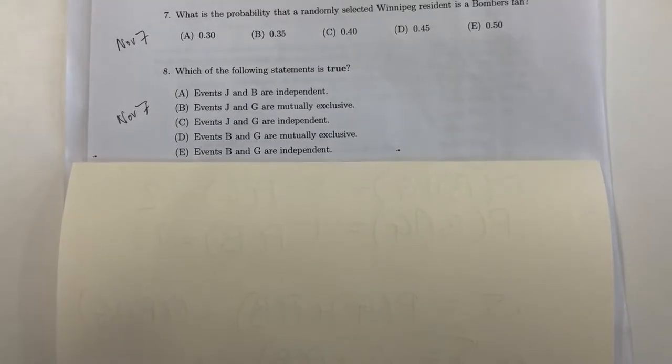I'll be going over question 8 from sample final number 4. From the previous question where we drew out the Venn diagrams for the events where someone's a Jets fan, a Gold Eye fan, or a Bomber fan, we are asked which of the following pair of events are independent or mutually exclusive.